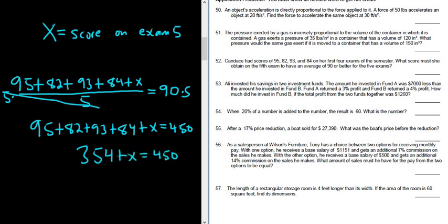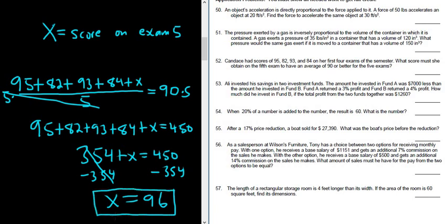And then we just subtract the 354 from both sides. So minus 354 minus 354. So her grade must be, let's see, 450 minus 354. So she needs a 96 to have an A average on her exams. A or better, right? So to get a 90, she needs at least a 96.